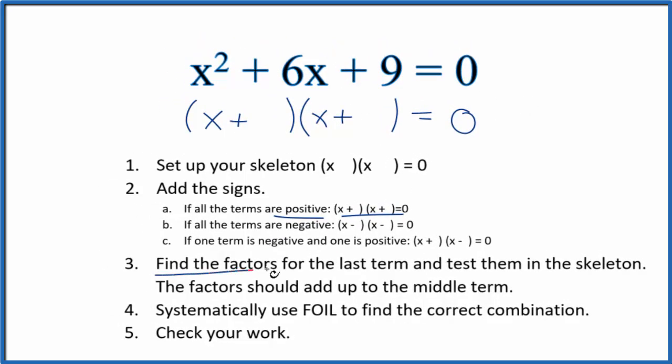So now we're going to find the factors for this last term here, the 9, that add up to 6. So we know 1 times 9, that would equal 9, and 3 times 3 would equal 9. These are our factors.